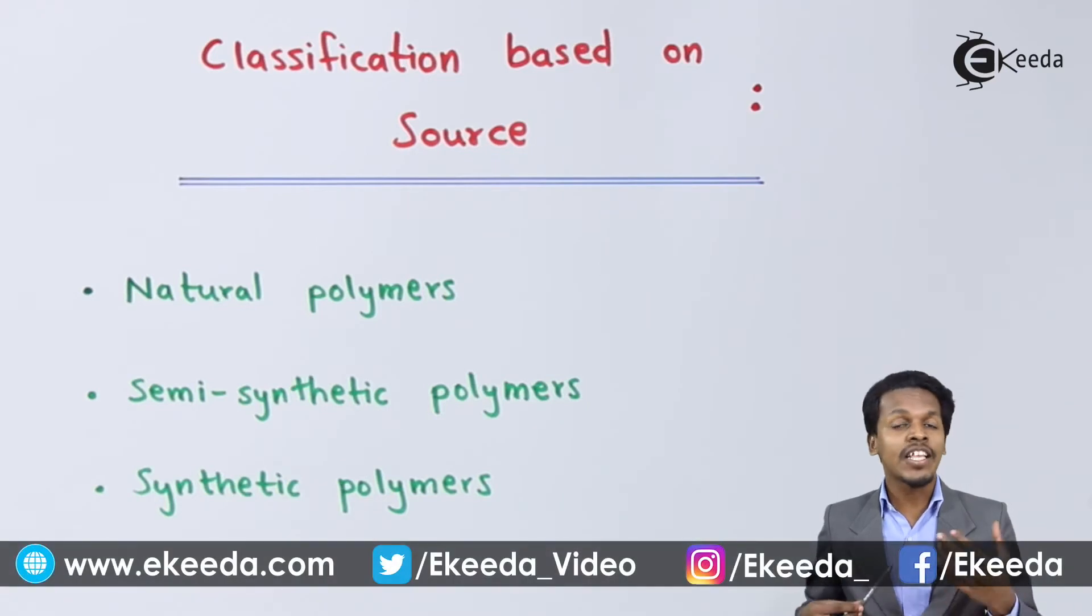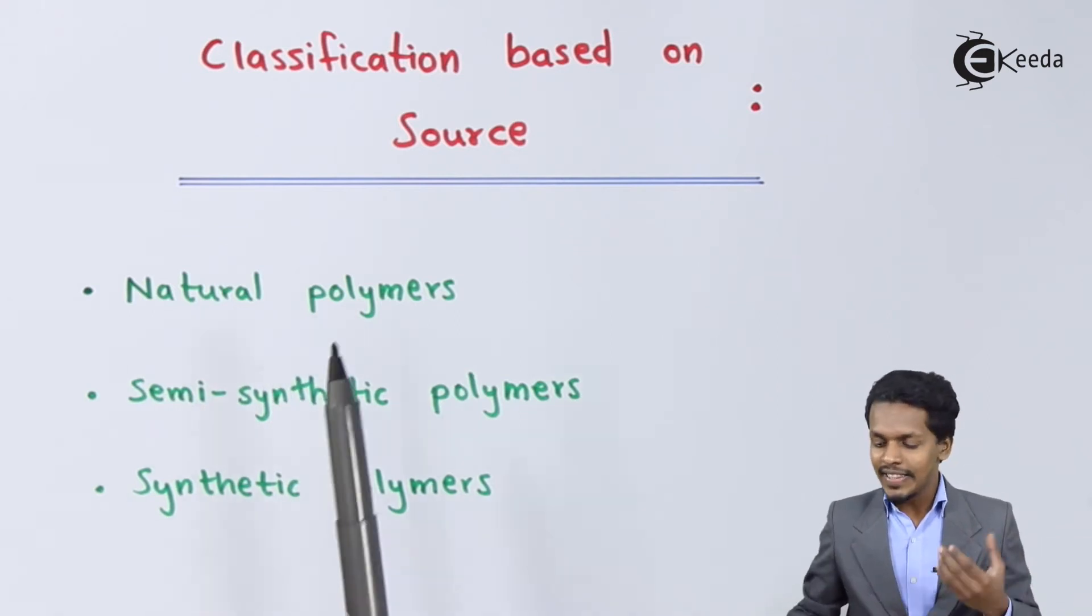So friends, now we are going to talk about the classification of polymers based on sources. I'm going to cover three points. The first one is that polymers can be obtained from nature.